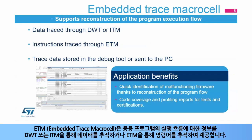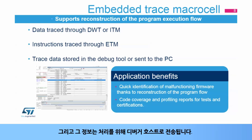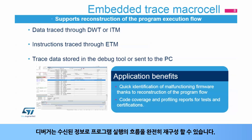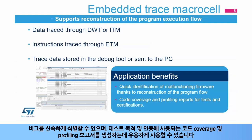The embedded trace macro cell or ETM provides information about the execution flow of the application by tracing data through the DWT or ITM and tracing instructions through the ETM. This information is then sent to the debugger host for processing, allowing the debugger to completely reconstruct the execution flow. It is very useful to quickly identify bugs and also generate code coverage and profiling reports, which are used for test purposes and certifications.